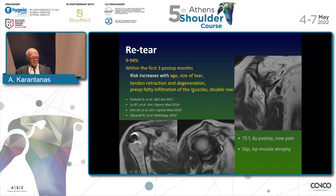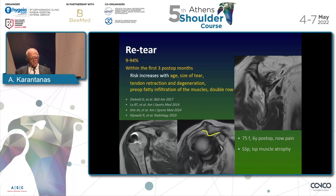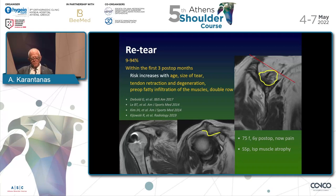What we do in our report is to particularly address fatty infiltration of the muscles. For instance, this 75-year-old lady six years after operation has pain. The distance between the humeral head and the acromion is almost zero. Unfortunately, there was no subacromial decompression, and there are lots of osteophytes projecting under the acromion — perhaps the cause of retear. Using the tangent line method, the supraspinatus shows fatty infiltration grade 2-3, and the infraspinatus is grade 4. Usually in these patients we don't have very good results.